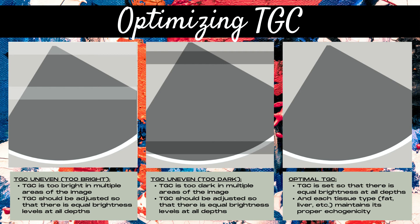The same thing can happen with the kidney. When imaging the kidney, the top part may appear brighter in echogenicity than the bottom part. You want both cortexes of the kidney to be the same brightness level, so pay attention to all aspects of the organ and ask yourself: is it the same echogenicity throughout?